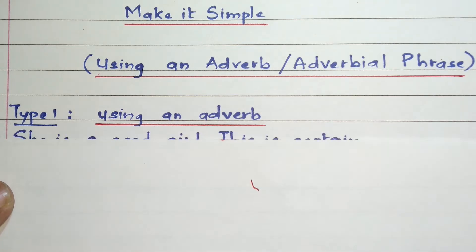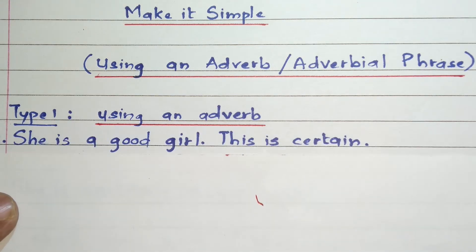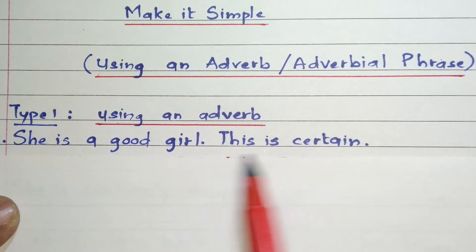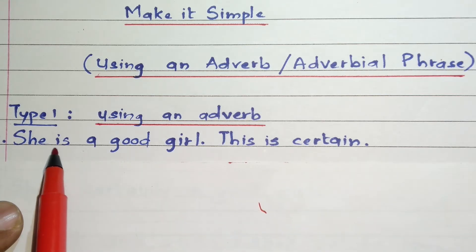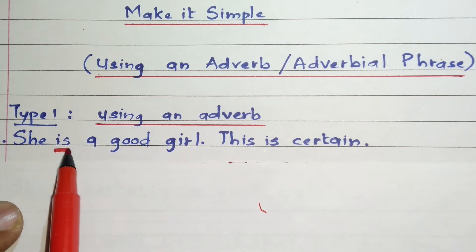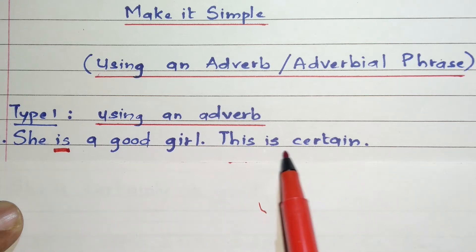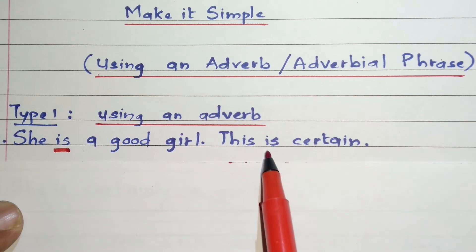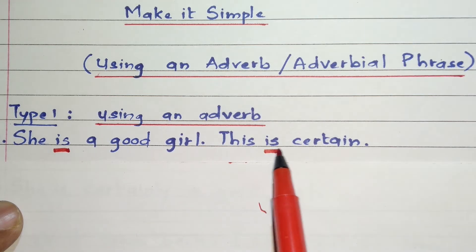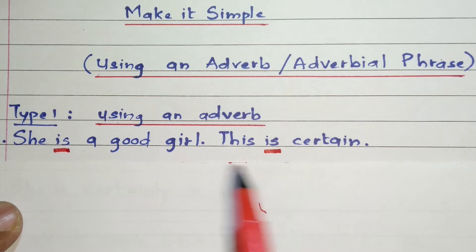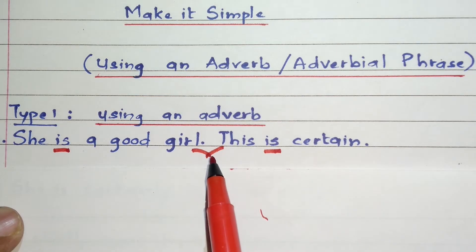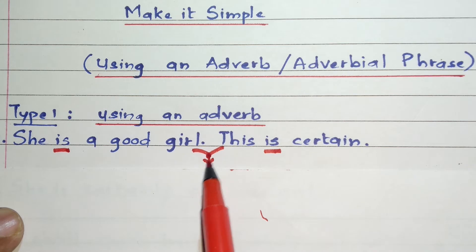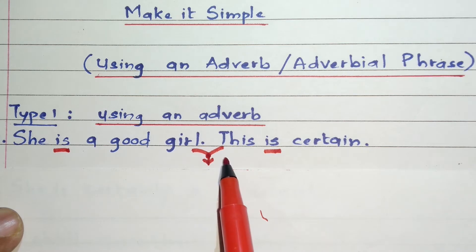See the first example. She is a good girl. This is certain. In the first sentence, 'is' is the finite verb. In the second sentence, again 'is' is the finite verb. Now we have to combine both these simple sentences into one simple sentence.